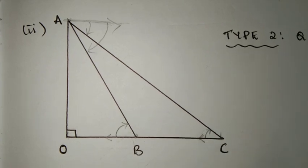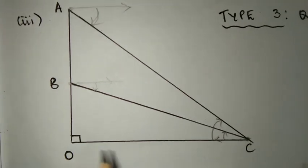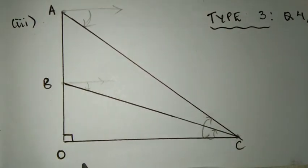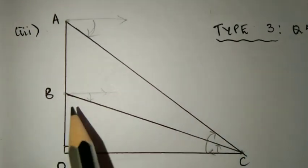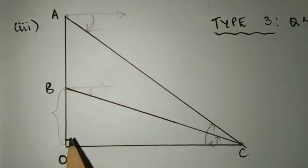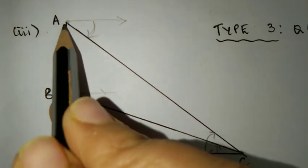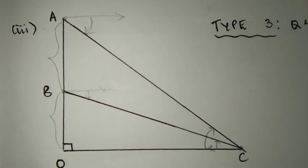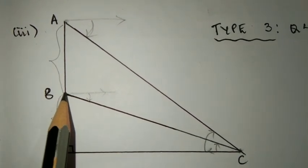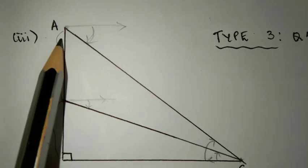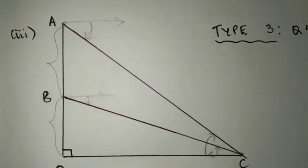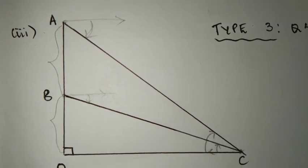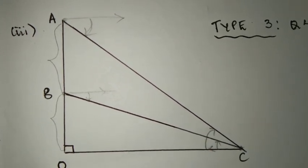So in type 2, we have the right angle here, there will be a building, and there will be two points on the ground, and their angle of elevation will be different. Now for type 3, we can have different ways — for example, if this much is a building and on top of the building there is another tower, the angles of elevation from the point on the ground are different. Otherwise, it can be the second floor and the top floor of a building also. That much will be the summary.